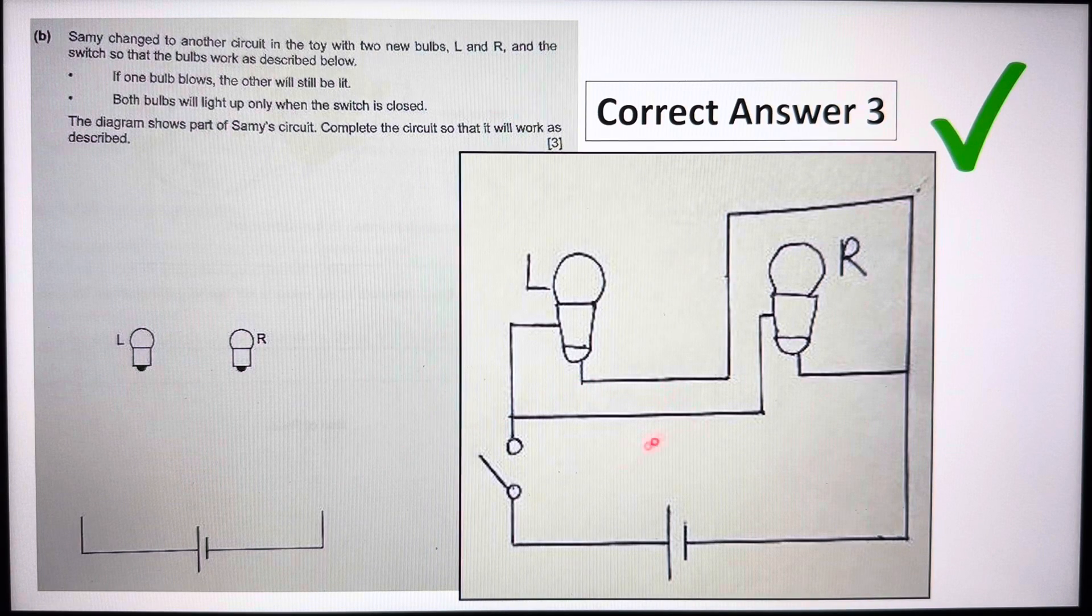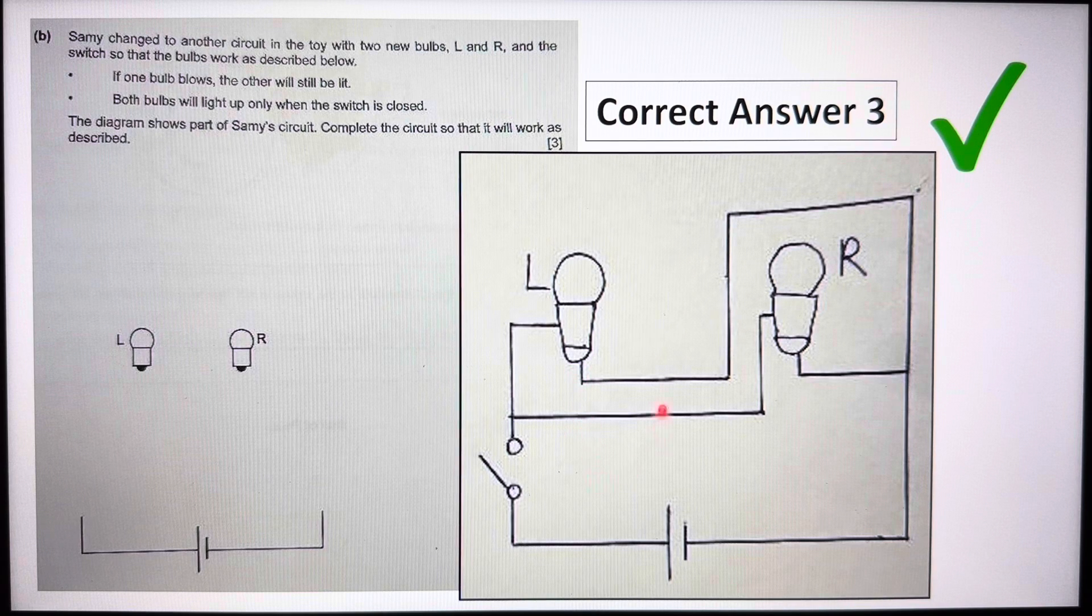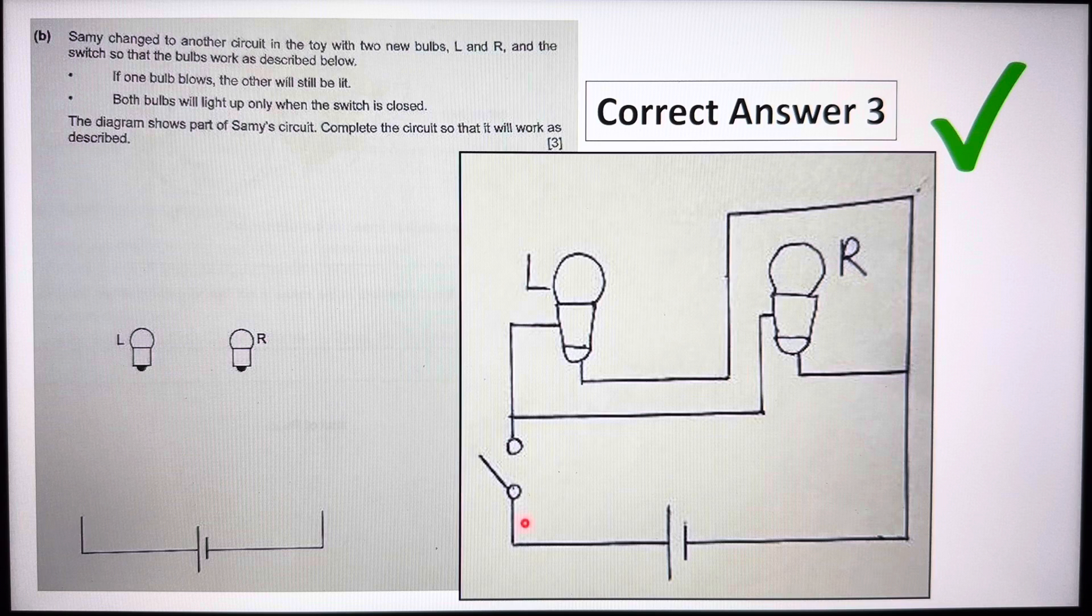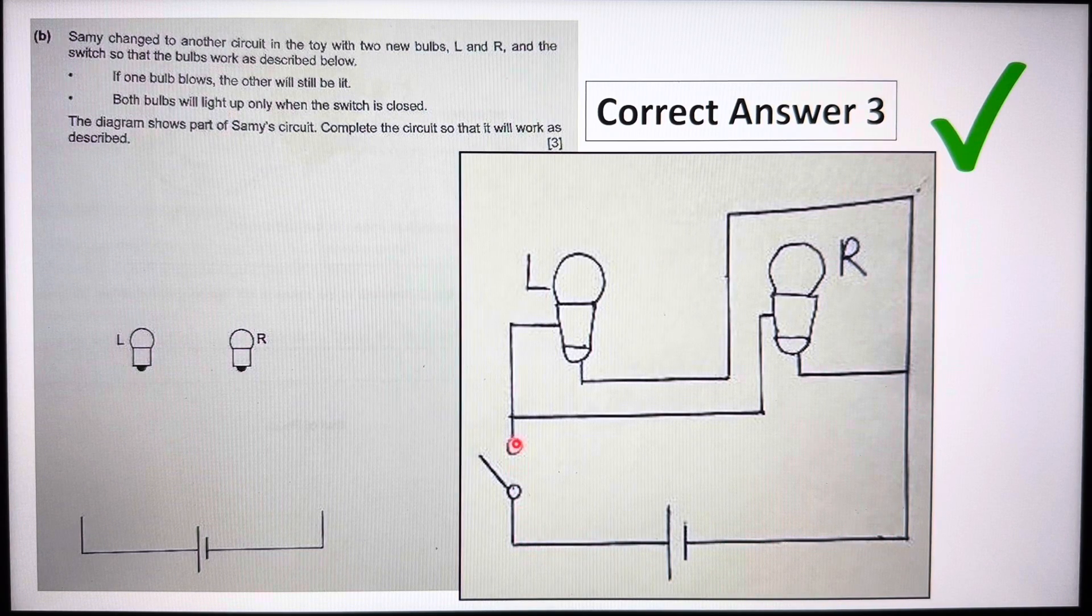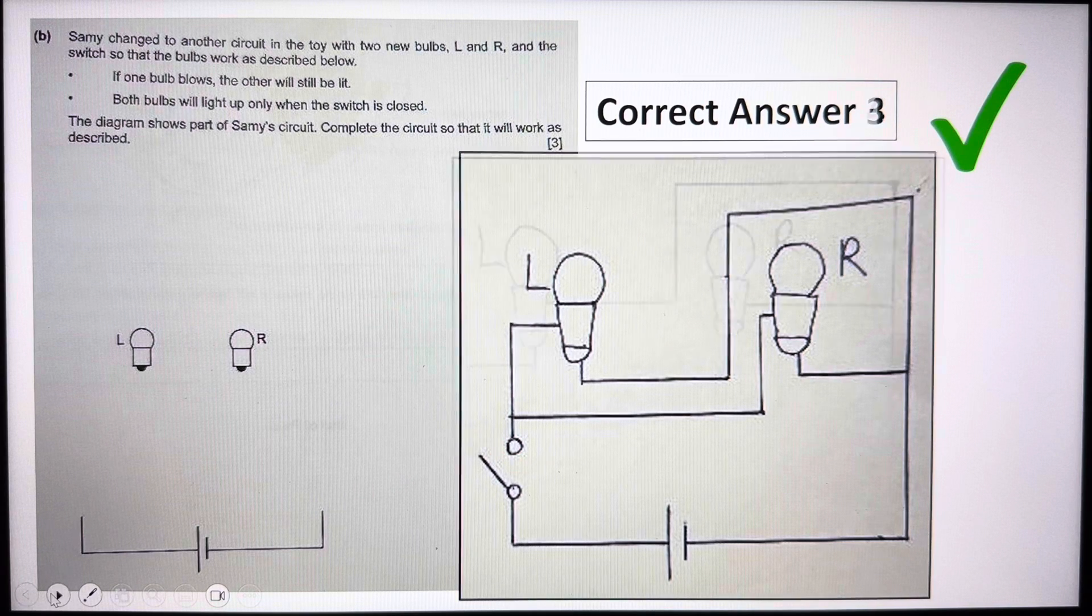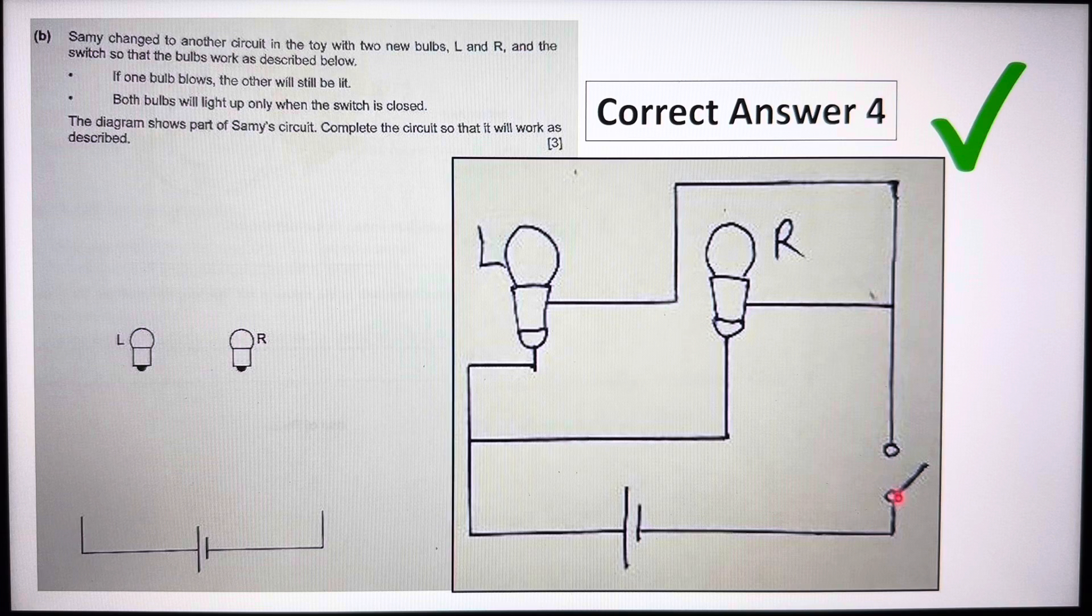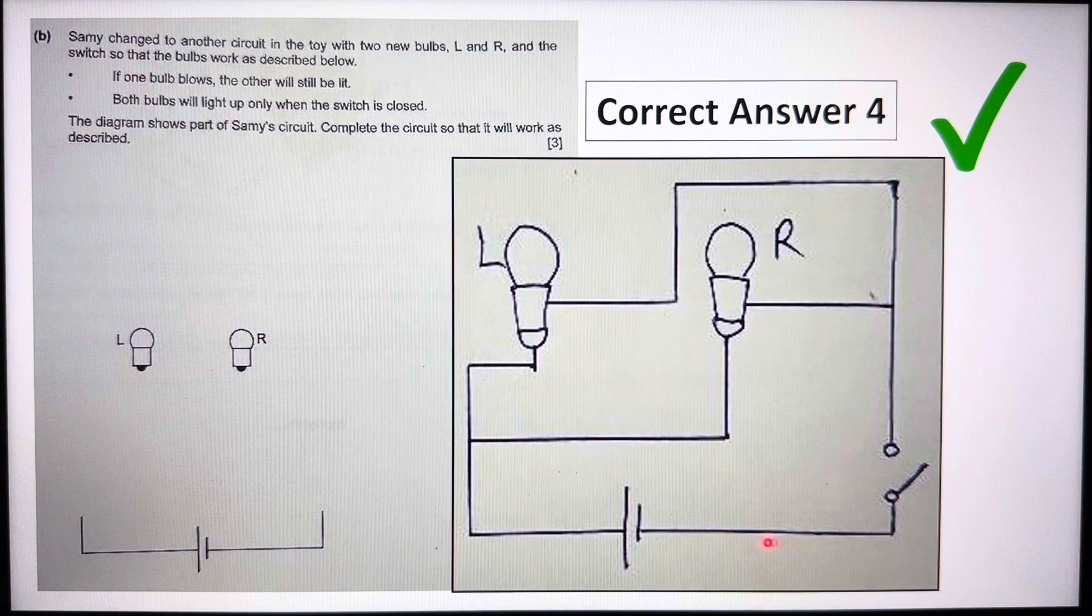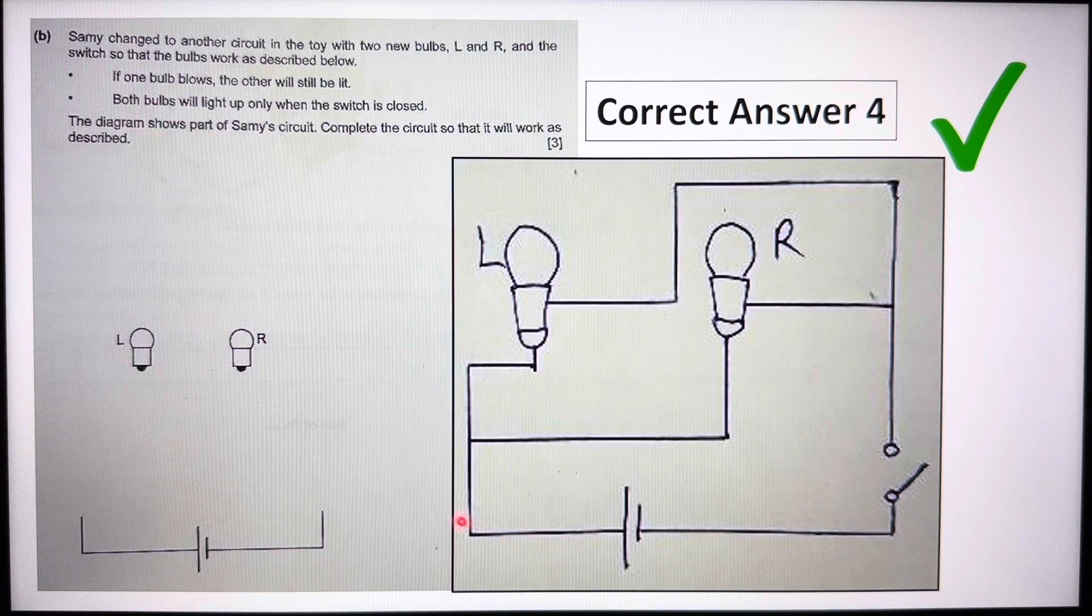So this is another possible answer, bulbs are connected properly, the entire circuit is in parallel arrangement, and the switch is anywhere on this line. So I have a fourth and final possible answer here. So now the switch is here. Of course, previously I showed you that it can be here, anywhere along here, here or here.